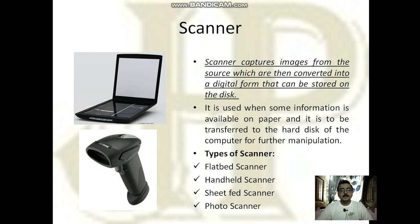Another device is the scanner. It is used to capture images from the source and then convert them into digital form. Generally, some information available on paper needs to be transferred to the computer using a scanner. You can easily see in various commercial departments this type of scanner known as a barcode scanner. There are also other types of scanners like flatbed scanner, handheld scanner, sheet-fed scanner, and photo scanner.